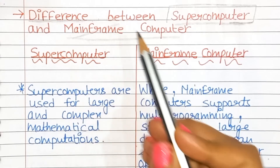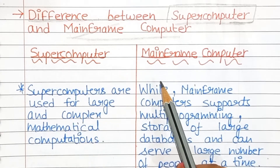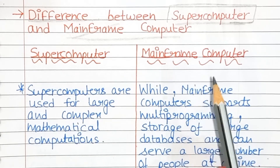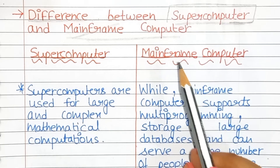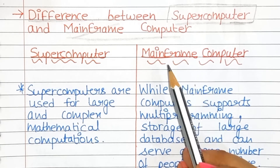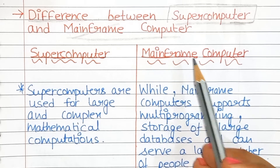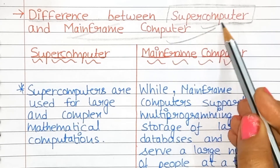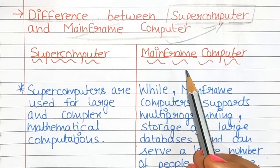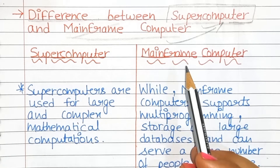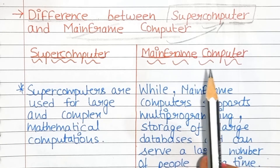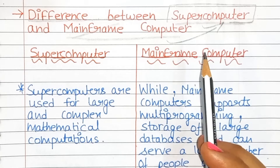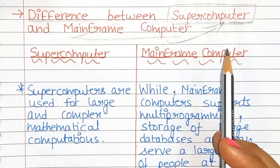What is a mainframe computer? These types of computers are comparatively smaller in size than supercomputers. Mainframe computers are slower in speed and help in storing a large amount of database in them.